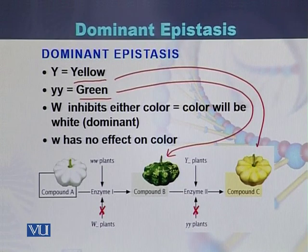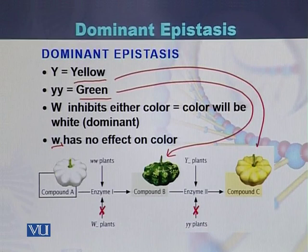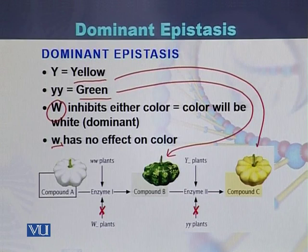If the gene is in recessive form, when W is recessive, this gene does not have any effect on the color of the summer squash, because this is an example of dominant epistasis. In dominant epistasis, the allele must be in dominant form — when it is in dominant form, it has an effect and can block the color.